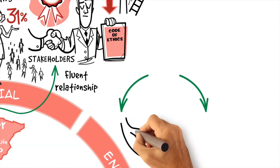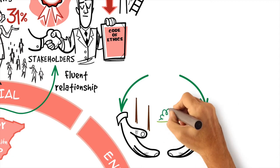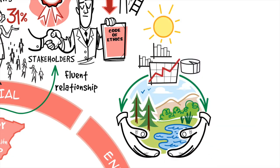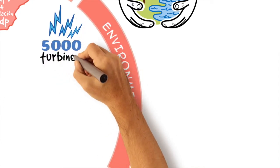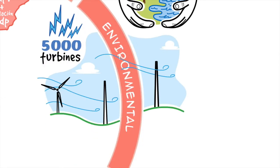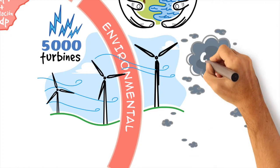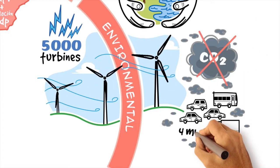Last but not least, companies also have the responsibility of protecting natural resources while they keep developing their activity. Do you know that EDPR has more than 5,000 turbines around the world? The gigawatt hours generated with them during 2013 avoided tons of CO2 emissions, equivalent to removing 4 million cars off the road in a year.